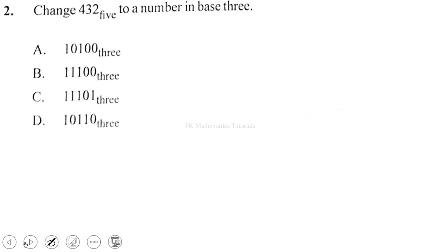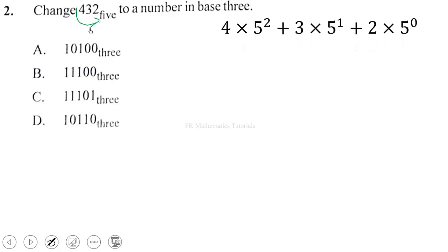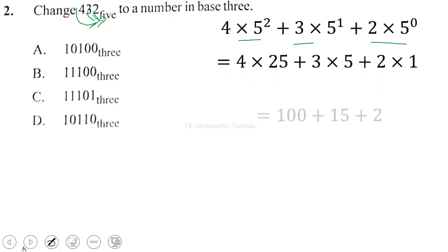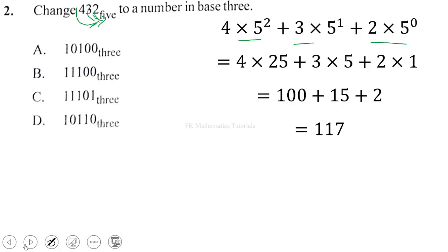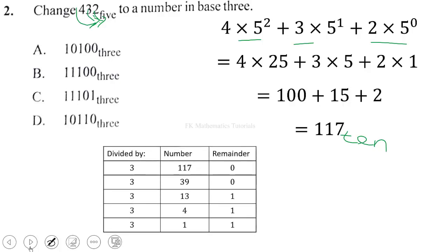Question 2: change 432 base 5 to a number in base 3. First, let's convert 432 base 5 to base 10. We take the 4 multiplied by the base squared, 3 multiplied by the base, and 2 multiplied by base to the zero. Starting from the units digit with exponent 0, the tens digit exponent 1, and the hundreds digit exponent 2. This gives us 4 × 25 plus 3 × 5 plus 2, which is 100 + 15 + 2 = 117 in base 10.